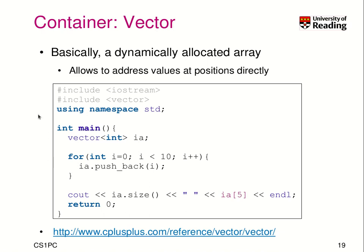Let's get started by looking at a specific container, which is the vector. So what is a vector? Well, it's basically a dynamically allocated array. It allows you to address values and positions directly. To use it, we have to include this type, which is vector. And as it's part of the standard library, we don't need to use .hpp or anything.